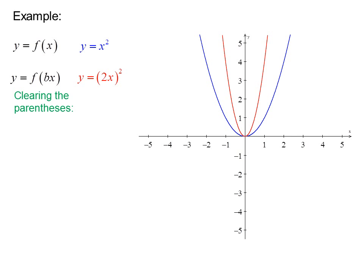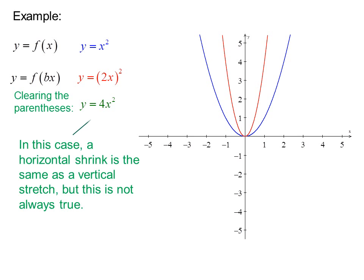In this case, if I clear the parentheses, I get Y equals 4X squared, which is a horizontal shrink — the same as a vertical stretch. But this is not always true.